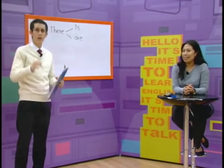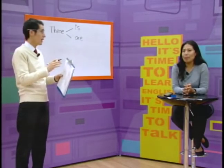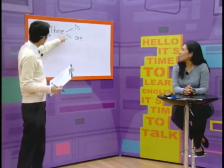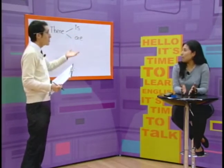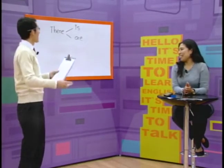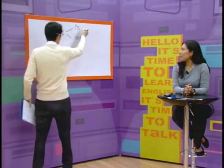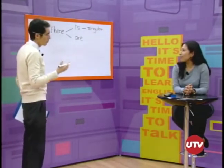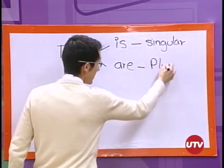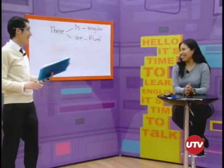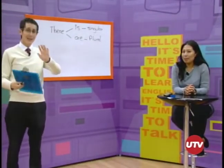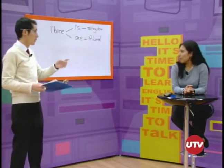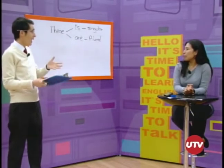¿Cuál es la diferencia? Singular y plural. Exacto. El there is lo vamos a relacionar con algo singular, y el there are con algo plural. Y da la casualidad que también se escribe igualito en inglés pero se pronuncia diferente: "plural" and "singular". El there is significa "hay" o "haber" para singular, y el there are significa "hay" o "haber" para plural.